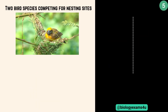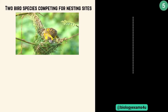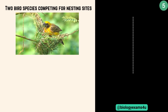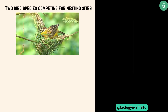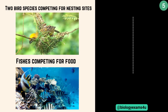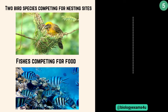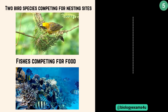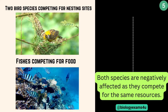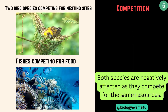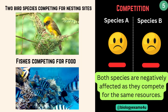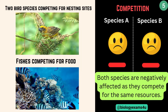The next interaction: two bird species competing for nesting sites in a tree — both are affected, and both may have reduced reproductive success due to limited space. Second example is fish competing for food in a shared habitat. In both cases, both species are negatively affected as they compete for the same resources. This is called competition — species A and species B are both negatively affected.